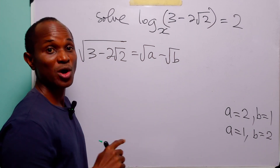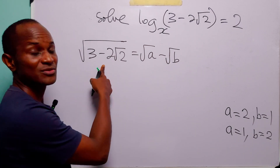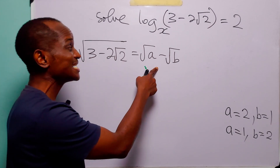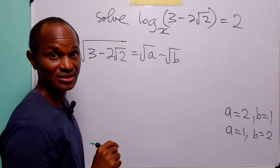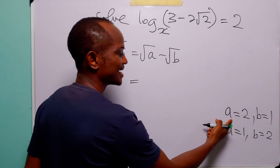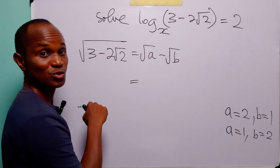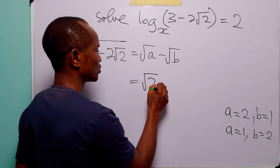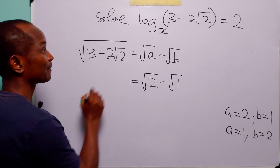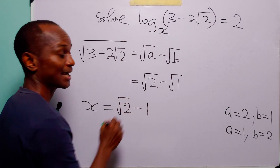The question now becomes: which one is the right answer? We go back to the original expression and note that 3 minus 2 root 2 is positive, so its square root must also be positive. For that to happen, a must be greater than b. So we choose a equals 2, b equals 1, giving us the square root of 3 minus 2 root 2 equals root 2 minus root 1, which is root 2 minus 1. Therefore x equals root 2 minus 1.